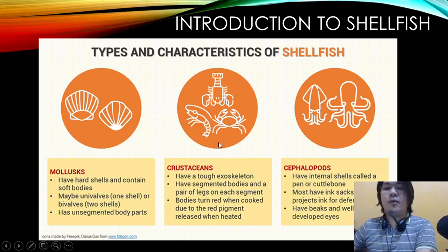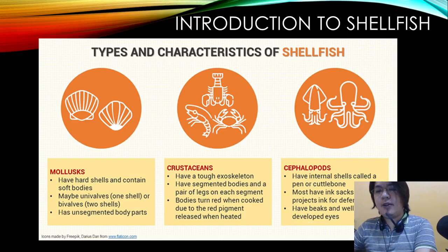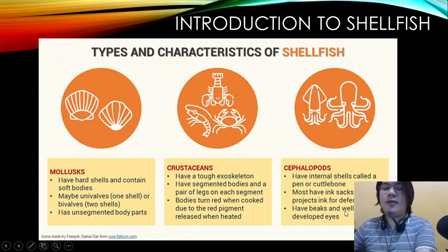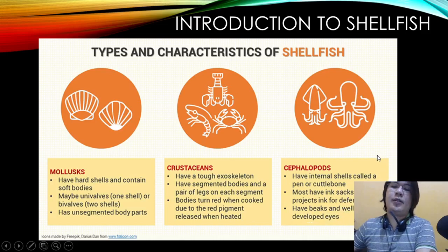Examples of crustaceans include crabs, shrimp, and lobsters. The next type is cephalopods, which have internal shells called a pen or cuttlebone. Most have ink sacs and project ink for defense, and have beaks and well-developed eyes.